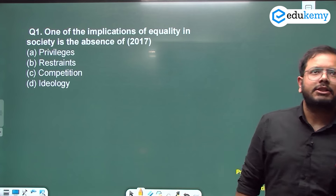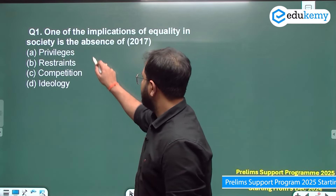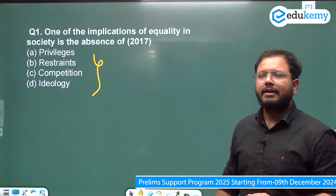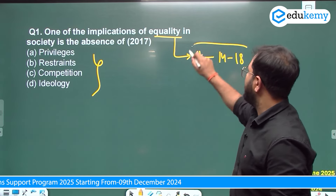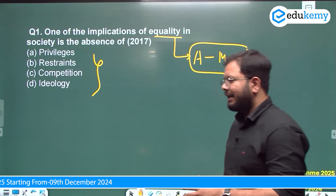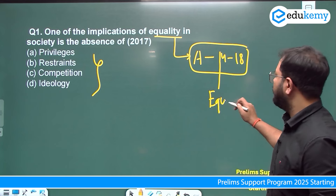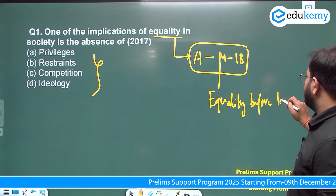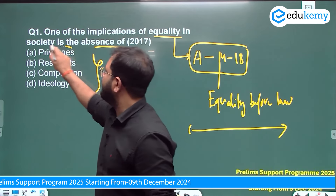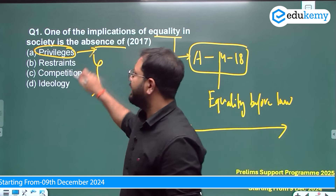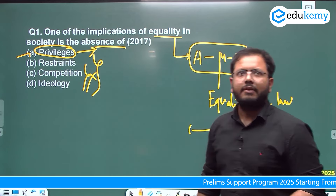Question number 1: One of the implications of equality in society is the absence of — options are privileges, restraints, competition, ideology. This is a 2017 question. Equality is dealt with in Articles 14 to 18. The preamble wants the state to achieve equality of status as well as equality of opportunities. Article 14 talks about equality before law — everyone is equal in the eyes of law, no one is above the law. It is basically the absence of any kind of privileges. So the answer here is A — privileges.